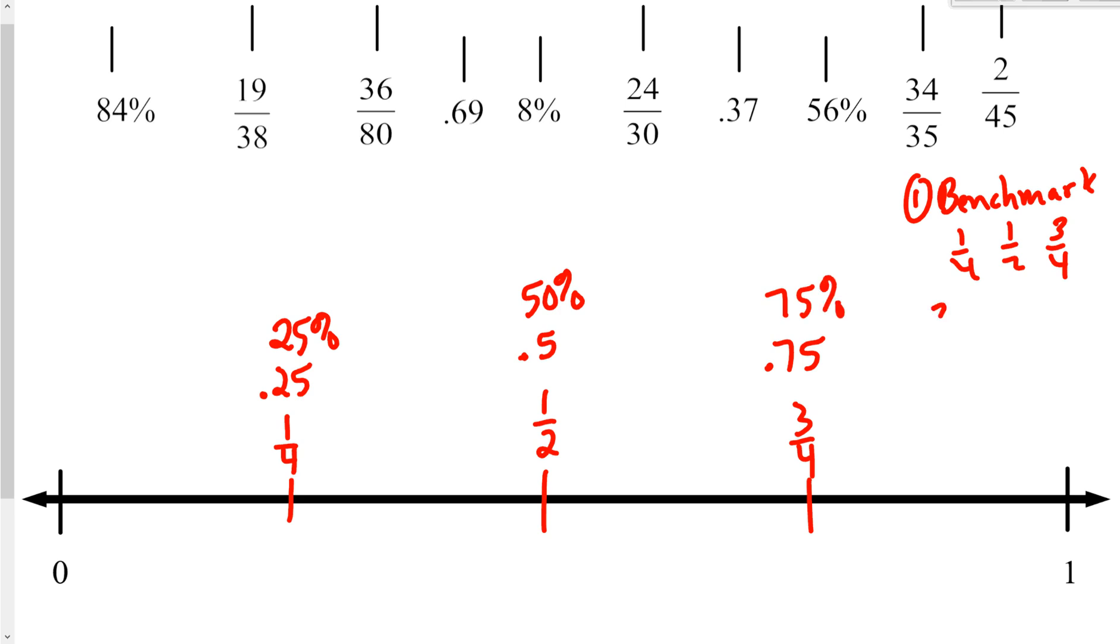Now the second step, I'm going to simplify where I can, because I might be able to make some things easier for myself. Like for instance, 19/38, that's one-half. That's really good to know. 36/80, I know I can simplify by four, so that's going to be 9/20. 24/30, I can simplify that by six, so four-fifths, and that's all that can be simplified.